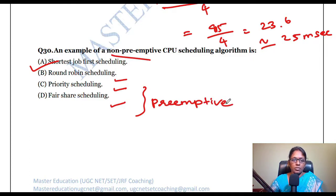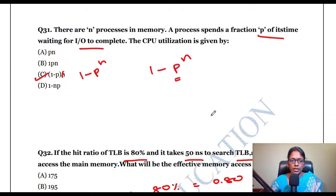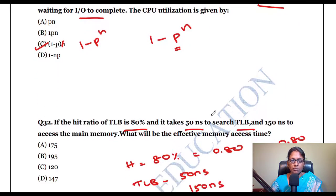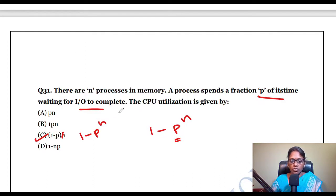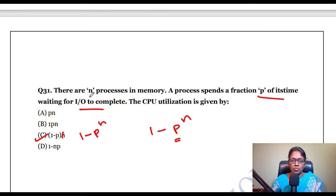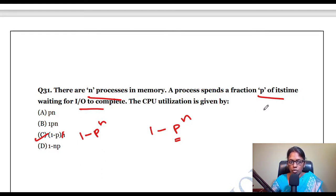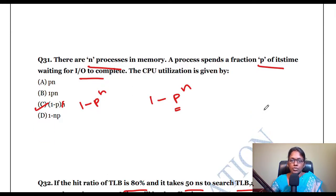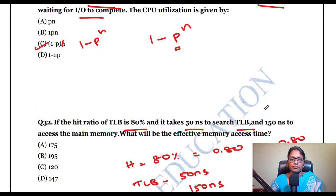There are N processes in memory; each process spends a fraction P of its time waiting for I/O to complete. The CPU utilization is given by 1 minus P to the power of N, where N is the number of processes and P is the fraction of time spent waiting for I/O.